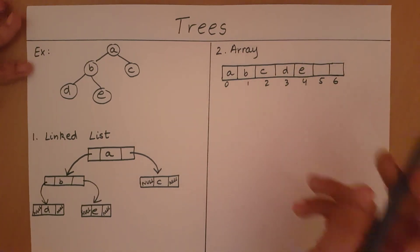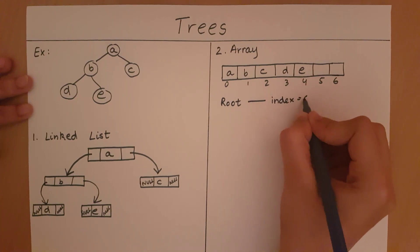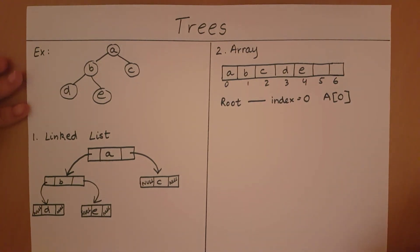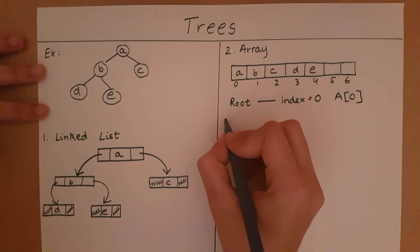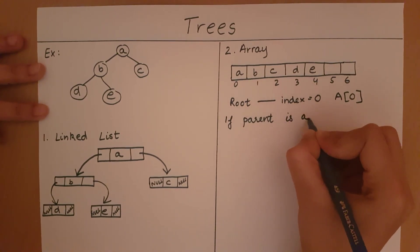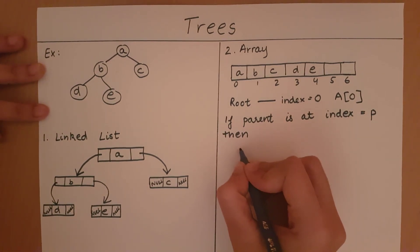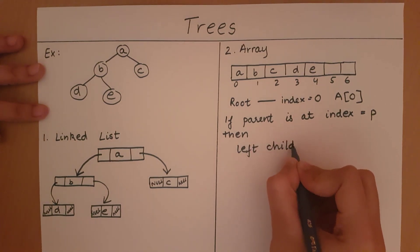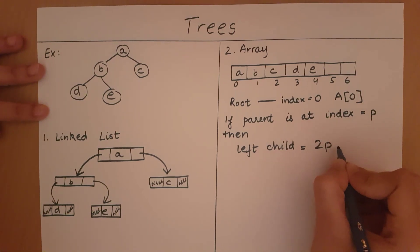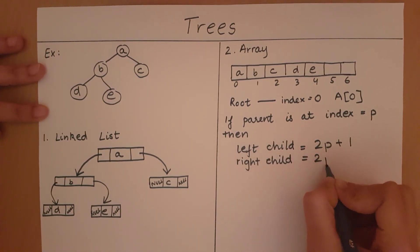If I store the elements in an array like this, how do I know which is the parent and which is the child? There are a few conventions followed. The root is stored at index 0. If a parent node is at index p, then the left child is found at index 2p + 1, and the right child is found at index 2p + 2.